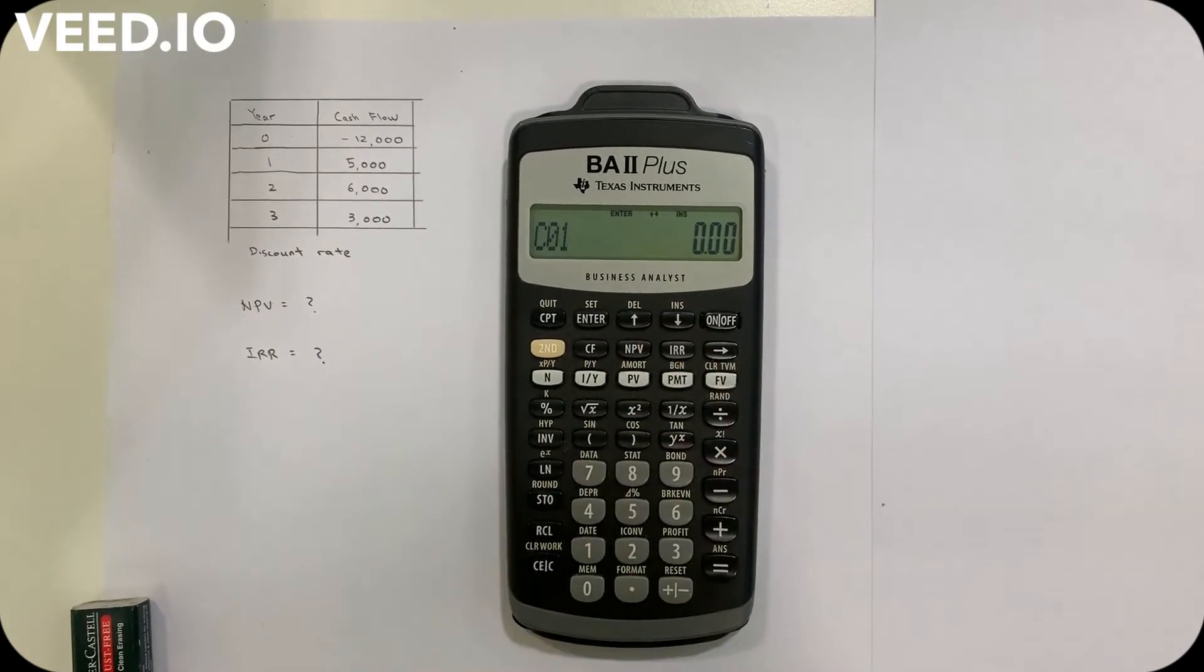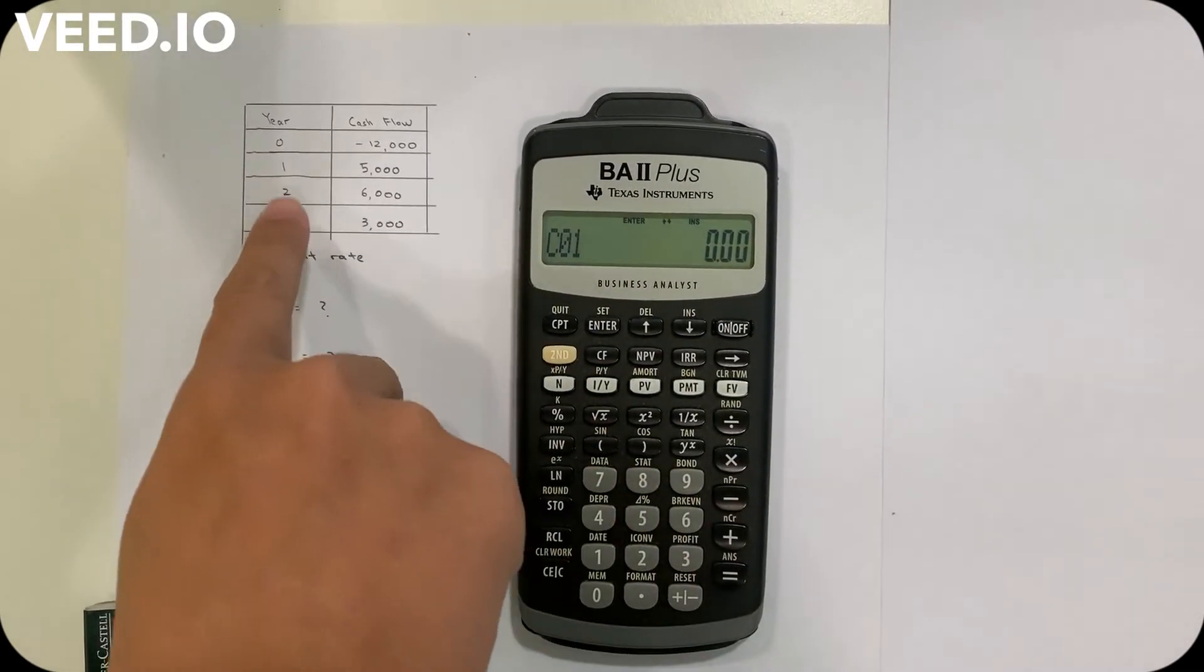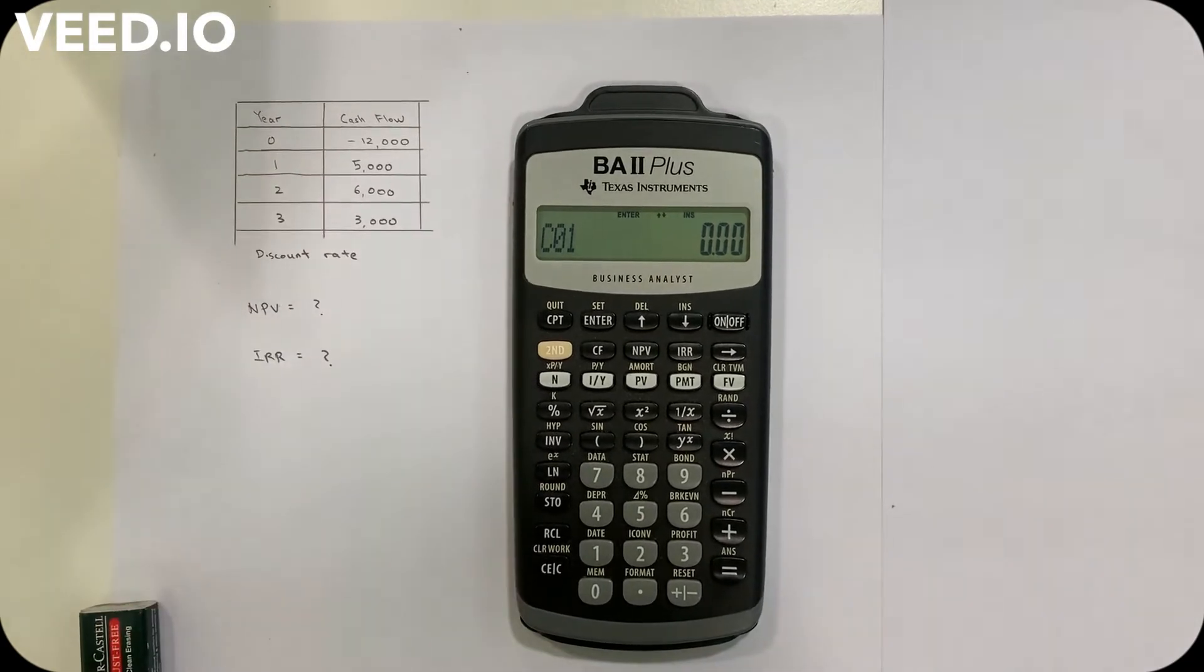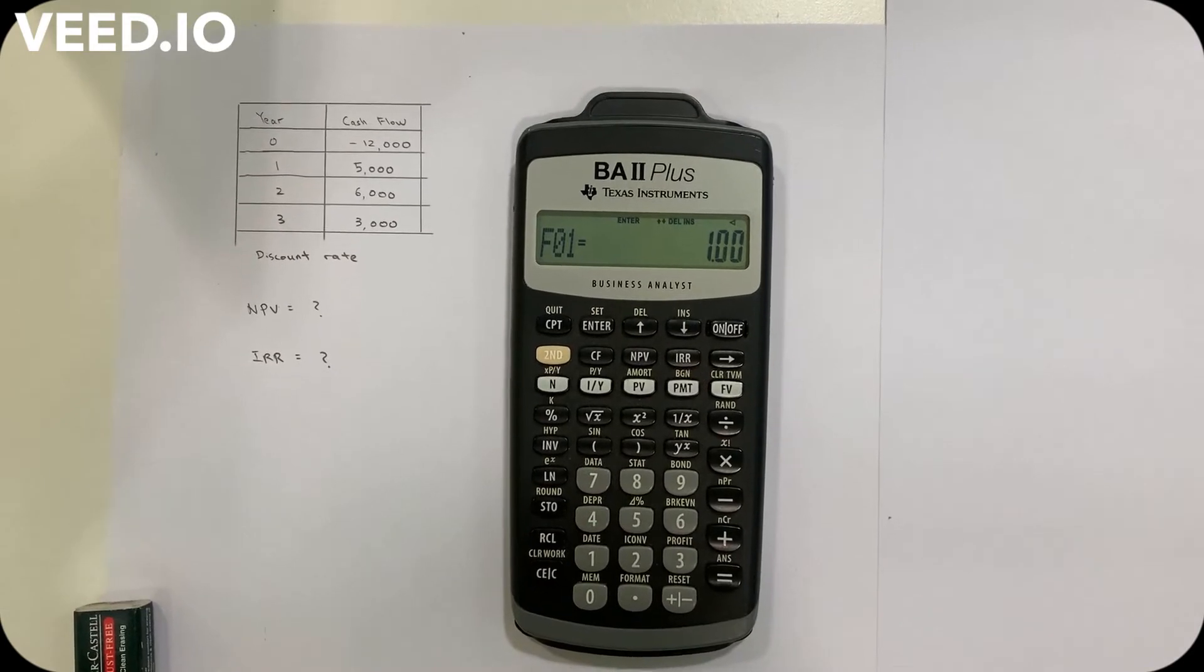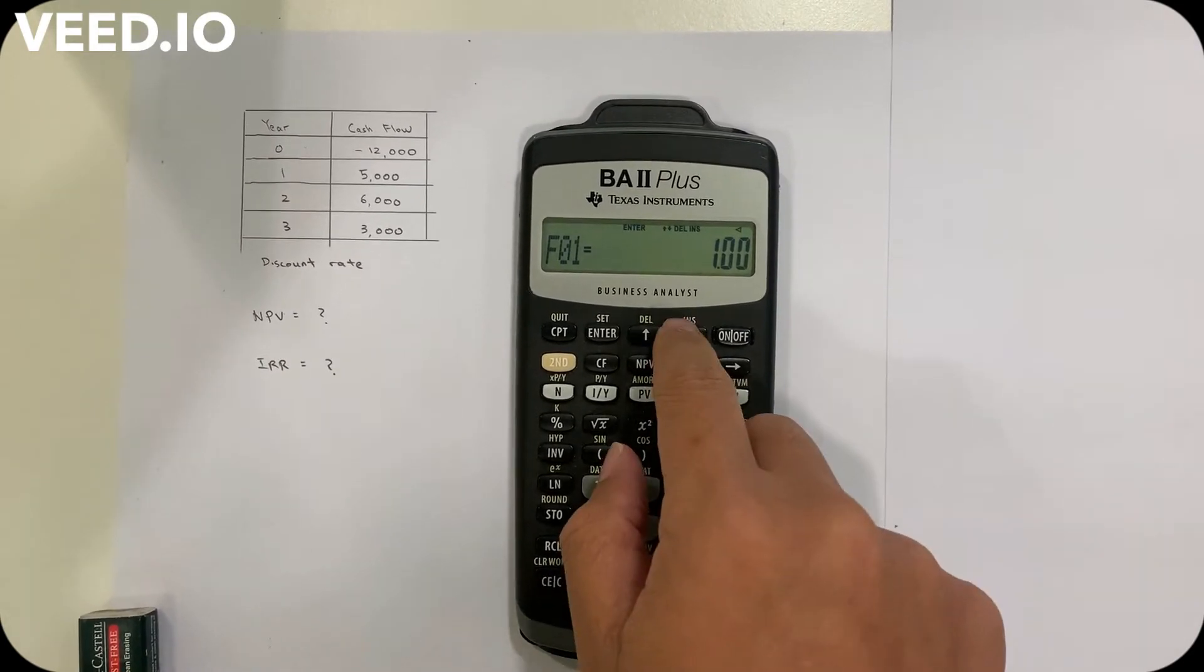Then press down for C01, which is the cash flow in year one. Here I key in 5,000, then enter and going down again.